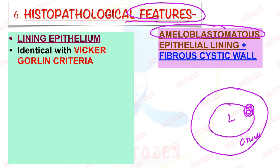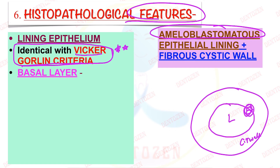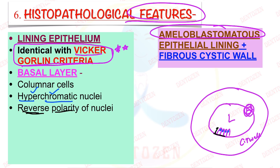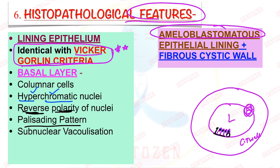This lining epithelium is identical with the Vickers-Gorlin criteria, which we discussed in the video on dentigerous cyst. This criteria says that the basal layer of this epithelium is made up of columnar cells. The nucleus is hyperchromatic — hyper means more, chroma means color — so it is a dark-staining nucleus. All the nuclei are placed away from the basement membrane, which is called reverse polarity. All the nuclei are at the same level in adjacent cells, which is called the palisading pattern. Below the nucleus, we can see a vacuole — called subnuclear vacuolization. When we see these features, it is called Vickers-Gorlin criteria, and that means it is Unicystic Ameloblastoma. But if we see flat epithelial cells, then it is still a dentigerous cyst — that is the criteria we use to differentiate dentigerous cysts from Unicystic Ameloblastoma histopathologically.